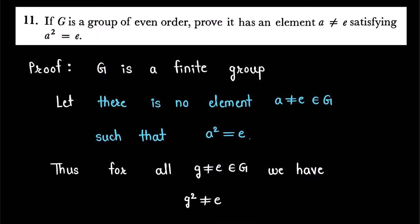So let's start our proof. We will prove this result by contradiction. It is given that G is a finite group. On the contrary, suppose there is no element a ≠ e in G such that a² = e. This is our assumption.